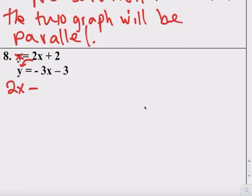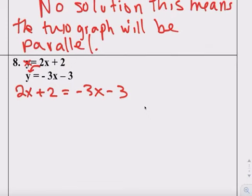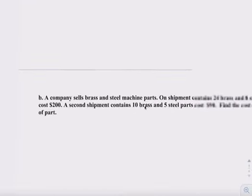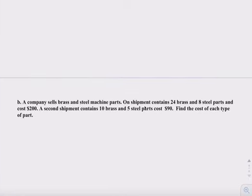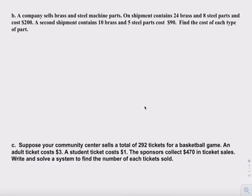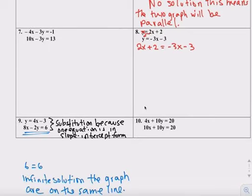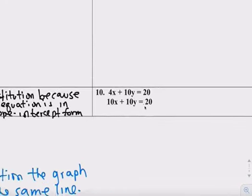2x plus 2 equals negative 3x minus 3. Now, make sure you know how to do these word problems. I'm going to have one of them on the test, okay? I went over them in class today, not these two, but the other ones. I expect you to be able to set up the equation and solve it.